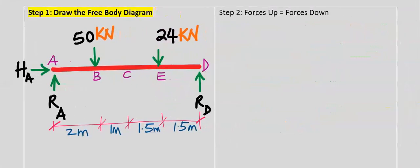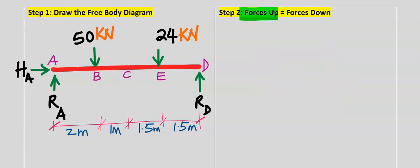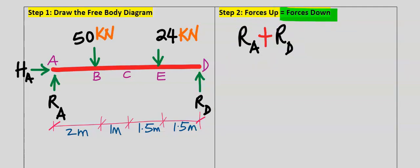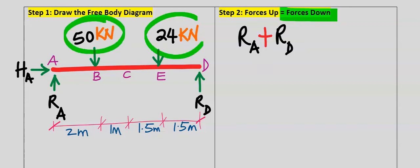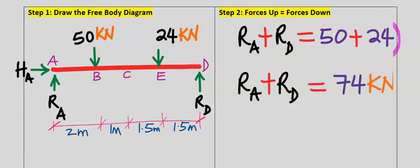Now that we are done with the free body diagram (step one), in step two we apply: forces going up equal forces going down. The reaction force at point A and the reaction force at point D are both pointing up, so we add those up. We then add all forces pointing down. The summation of all forces pointing up equals 74 kilonewtons.